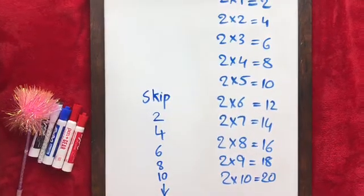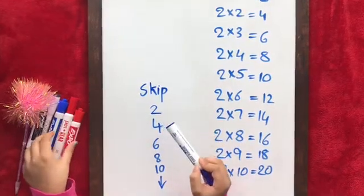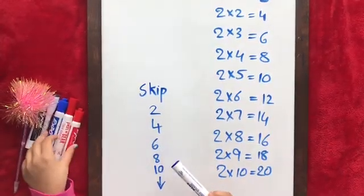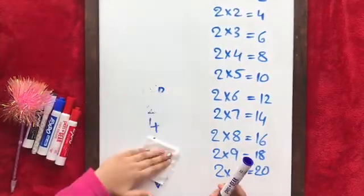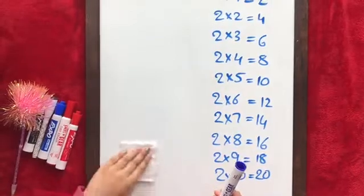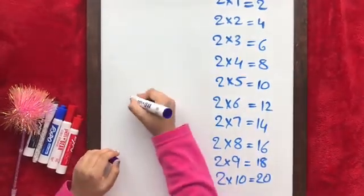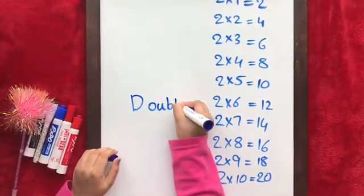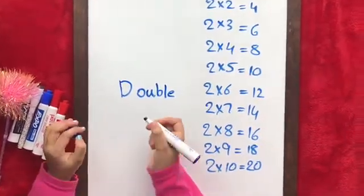How is because 2 times 1 is 2, 2 times 2 is 4, 2 times 3 is 6, 2 times 4 is 8, 2 times 5 is 10. And the other way is by doubling.